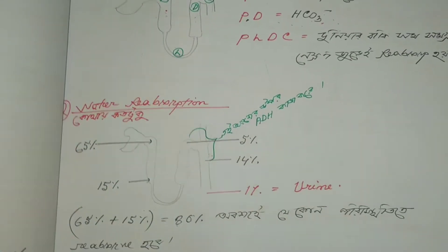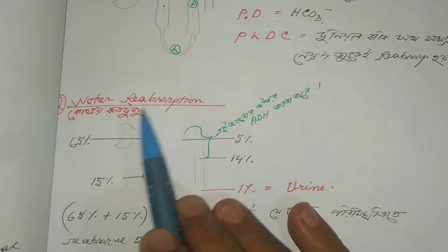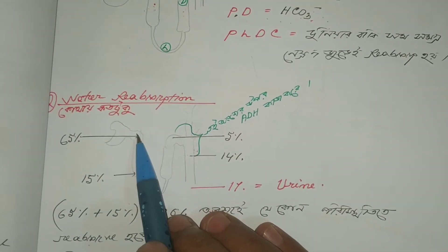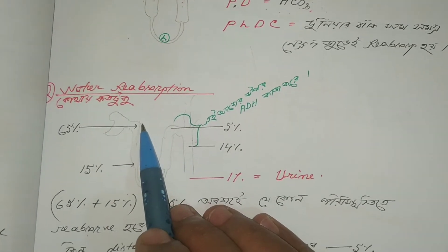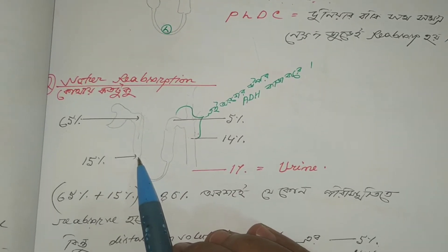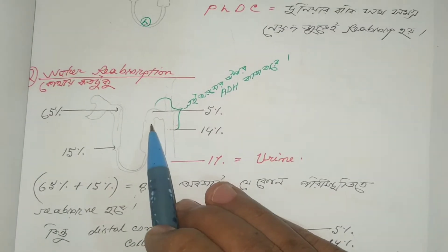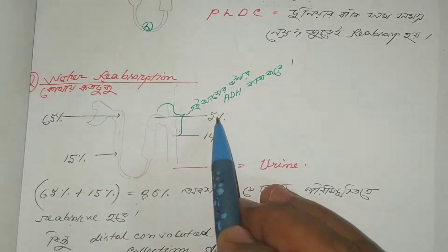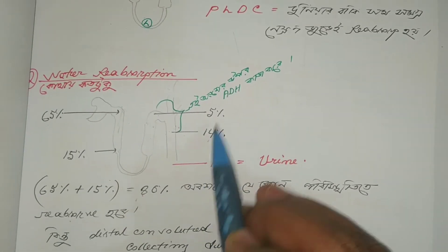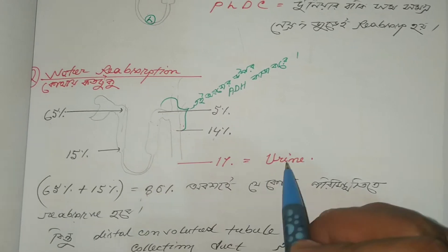So, we know that water reabsorption occurs here. The amount is 91%, which means only 1% becomes urine.